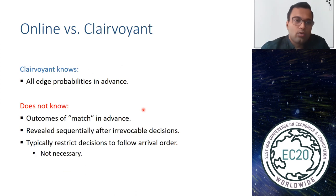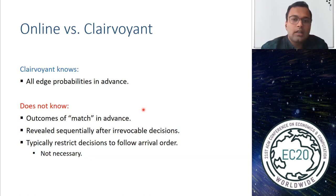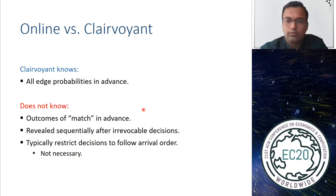Clairvoyant does not know the outcomes of decisions it might make, and its decisions are also irrevocable. Typically we restrict clairvoyant to make decisions in the same order as arrivals, but the results in this paper, as well as in past work, also hold if you consider the more powerful clairvoyant that can make decisions in a different order.